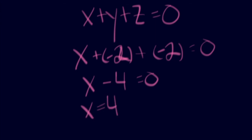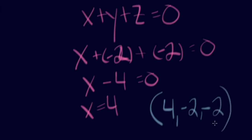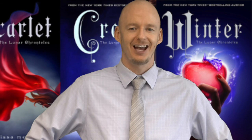The solution to this three-variable system is 4 comma negative 2 comma negative 2. That's solving a three-variable system using the method of boxing pairs of equations — a really efficient strategy. The book series behind me is The Lunar Chronicles, one of my favorites. Hope you've had a good time solving systems of equations two ways and tackling three-variable situations. Good luck, and may the force be with you.